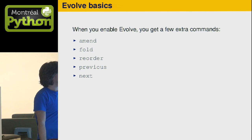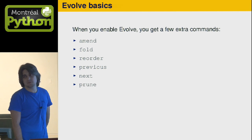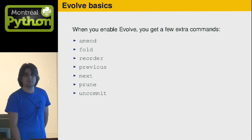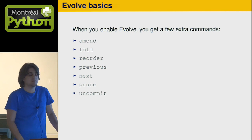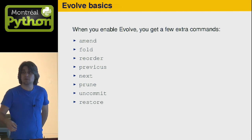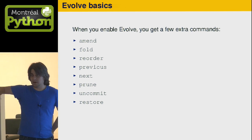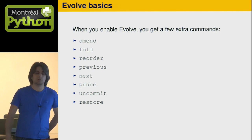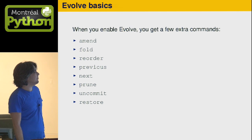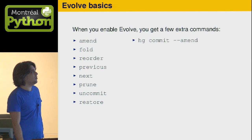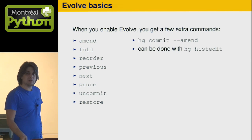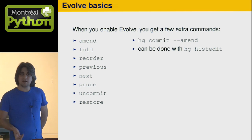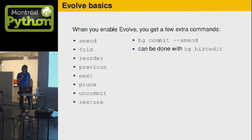Pruning is for getting rid of commits. Uncommit is for getting rid of a commit but keeping the changes in your working directory. Restore is if you already edited a commit and it's gone — it's for retrieving it from the garbage. Now, none of these commands are actually all that new because they're already pretty much implemented in Mercurial without evolve. What evolve does is provide these commands in slightly different ways, which I'll get to in a bit.